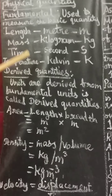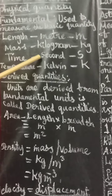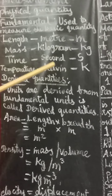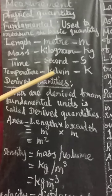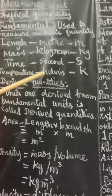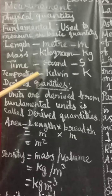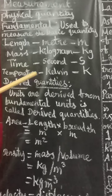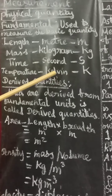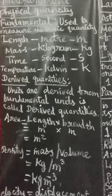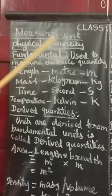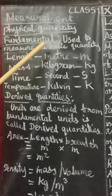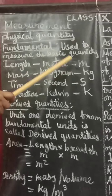The next fundamental quantity is temperature. Suppose you have to calculate how much heat energy is in a particular place or in a particular body — for example, measuring your body temperature. At that time you use the unit Kelvin. K is the symbol of the Kelvin unit.